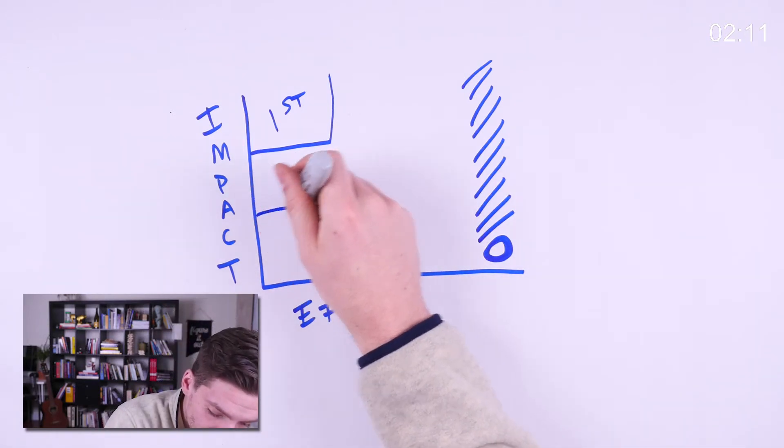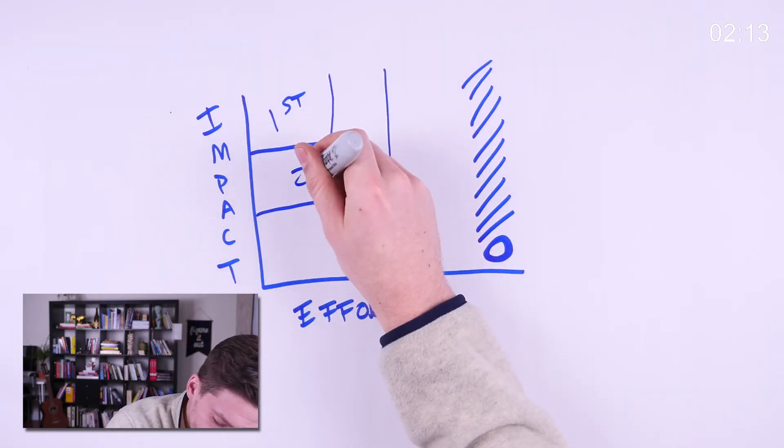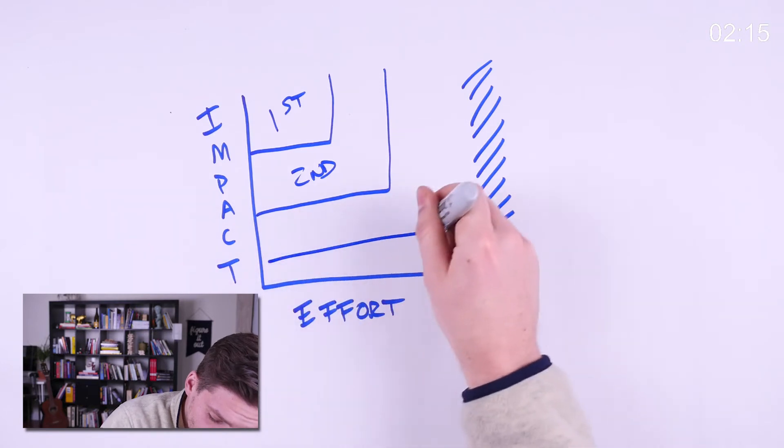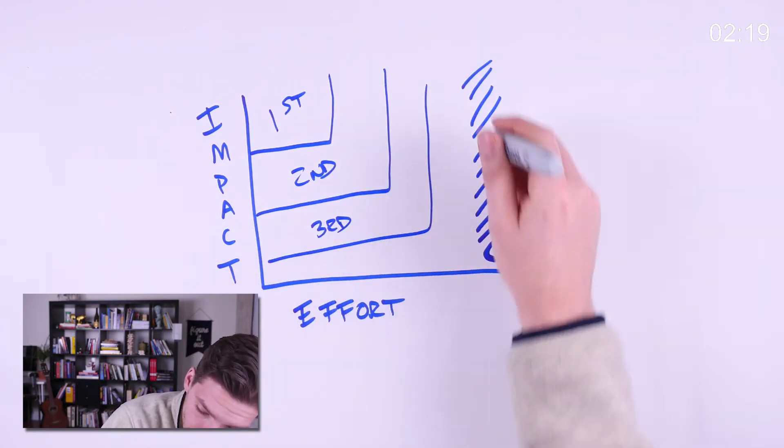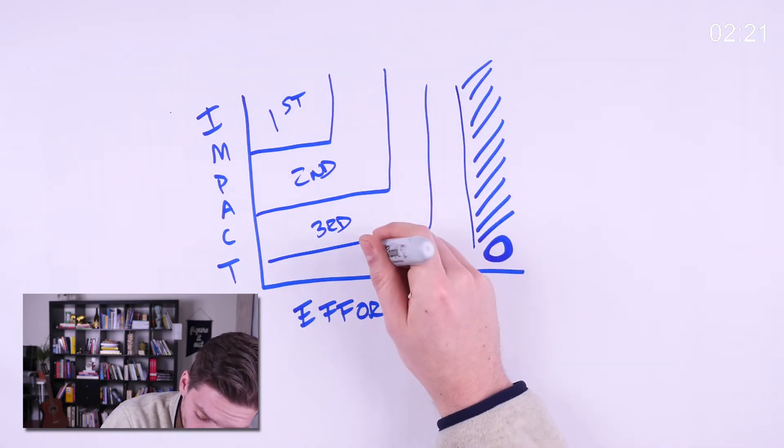And then we can keep drawing up these little quadrants like this until we reach the borders here. And this one will just naturally be fourth.